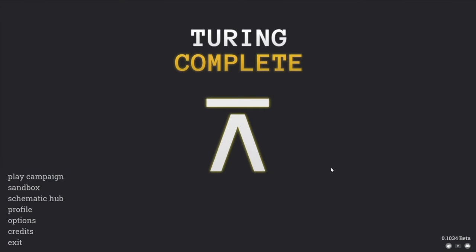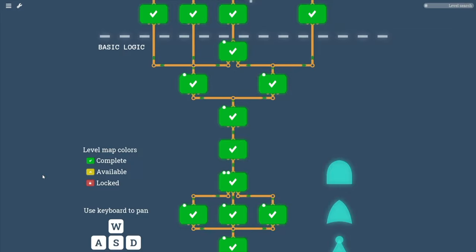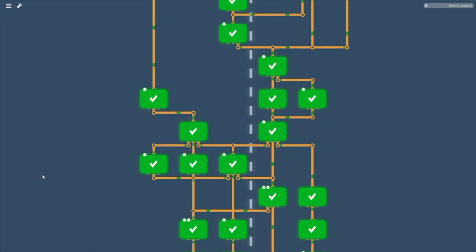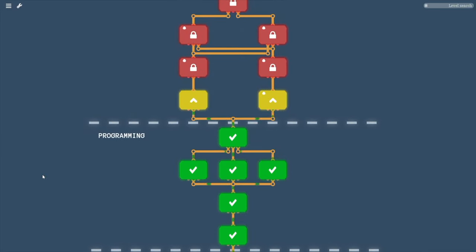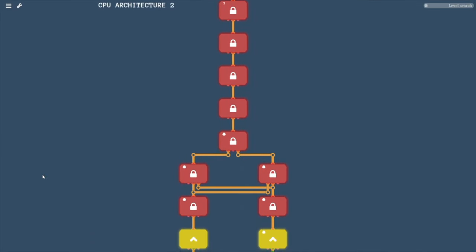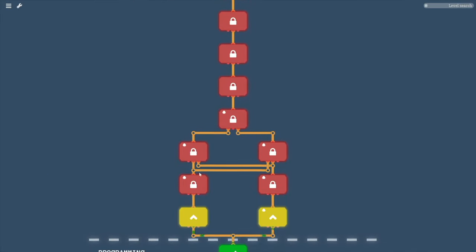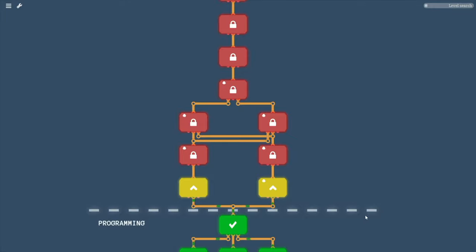Hello and welcome back to Gaming Like It's 1979. Today we're going to return to the world of Turing Complete for a brief let's play. When we last left off, we had just created a working computer and done some of the first programming assignments. Now this gets us to the CPU Architecture 2 section, and I'm going to have some comments about the nand-to-tetris course and how I suspect this architecture is going to fit in here.